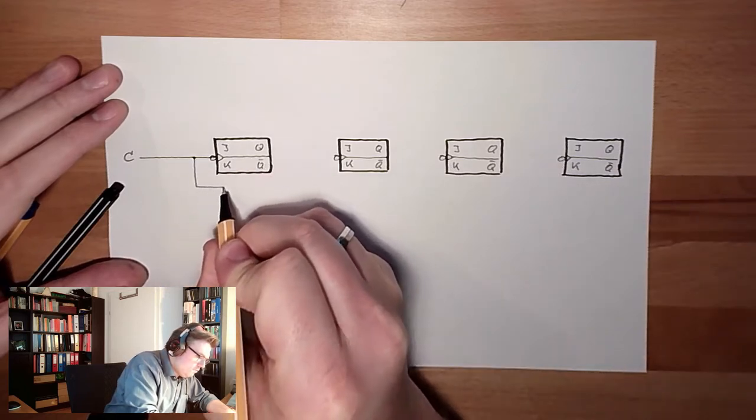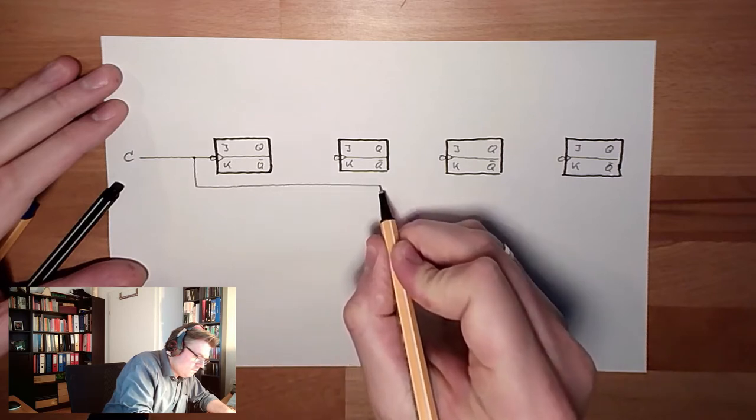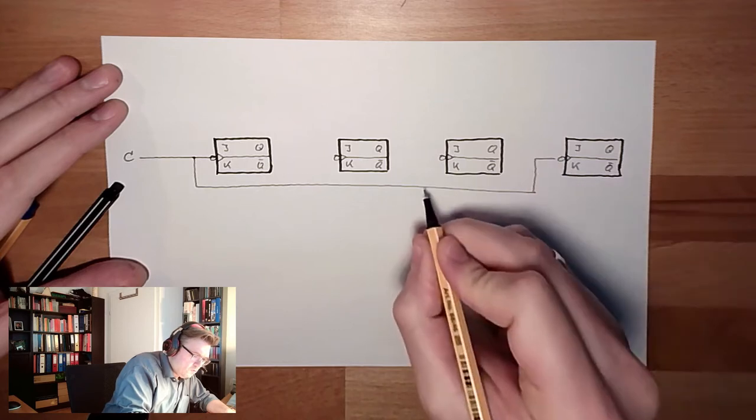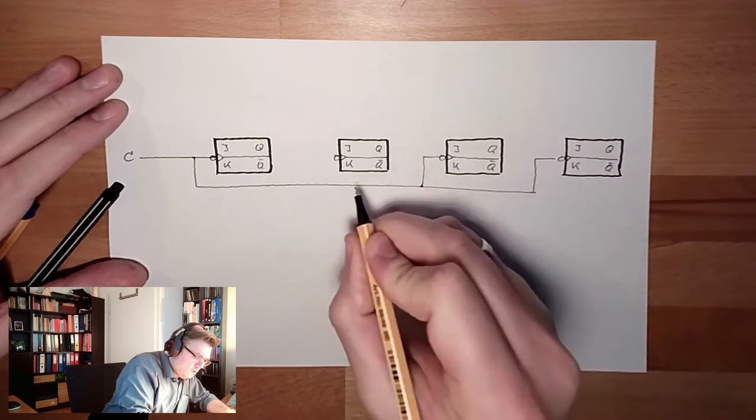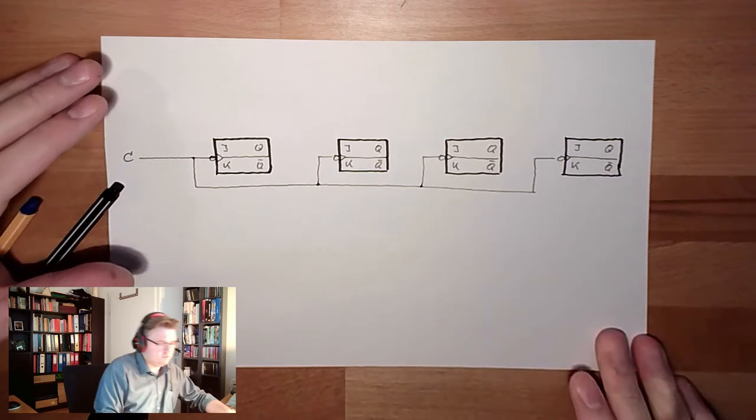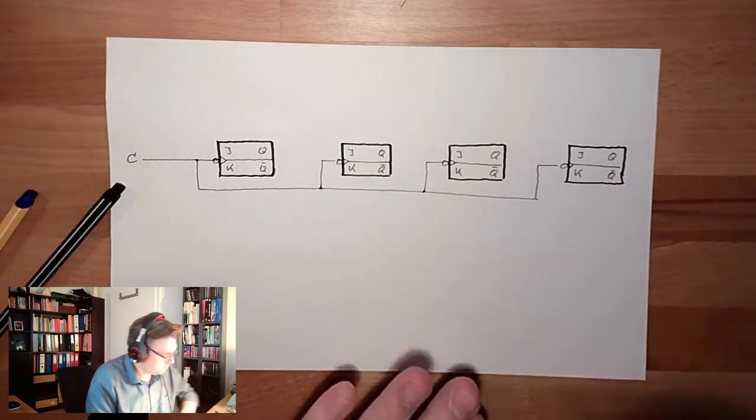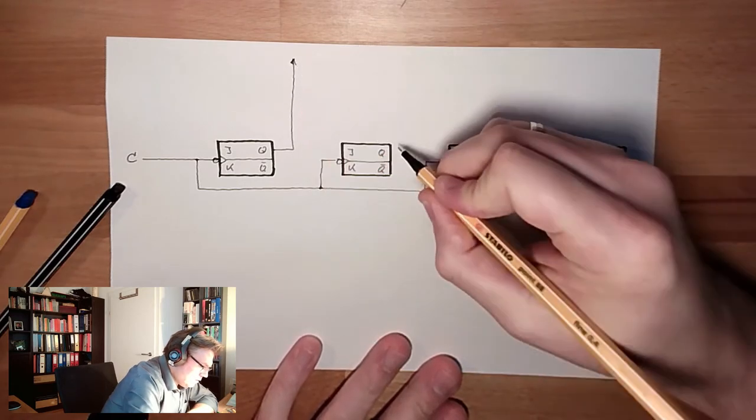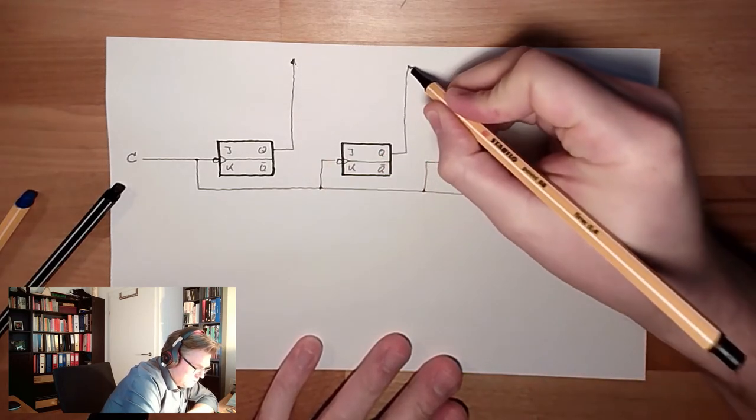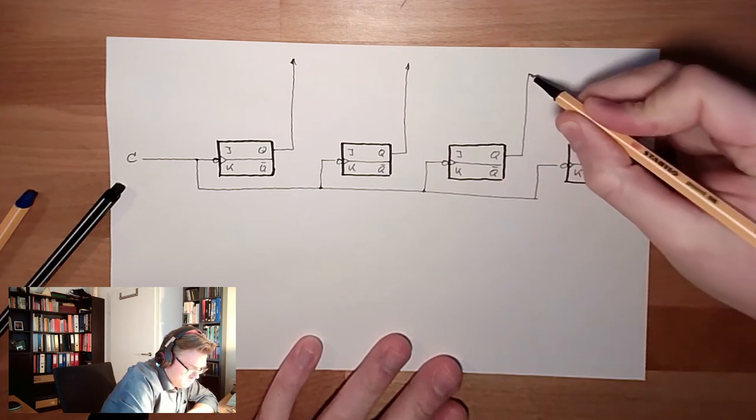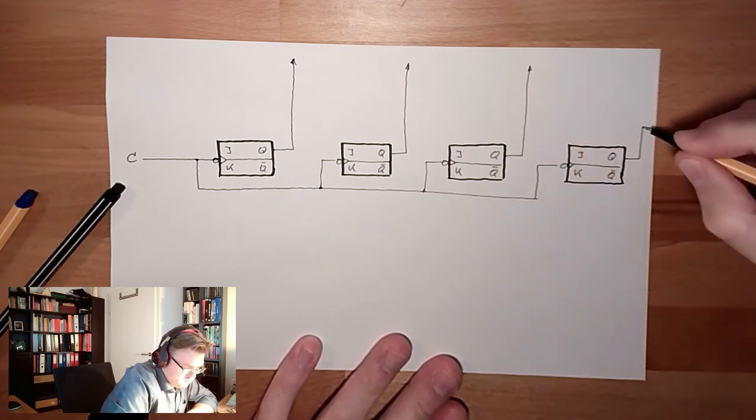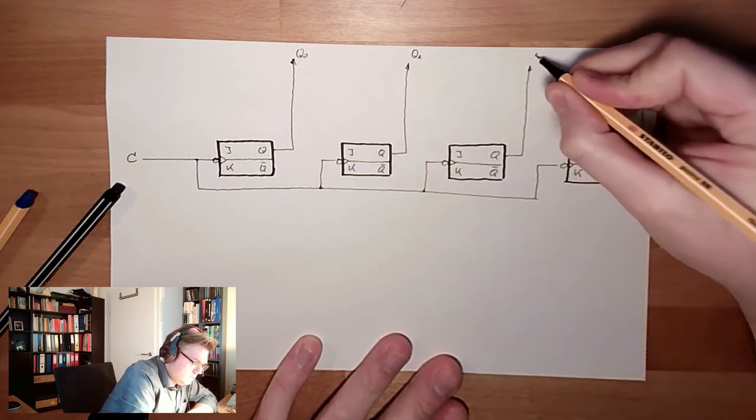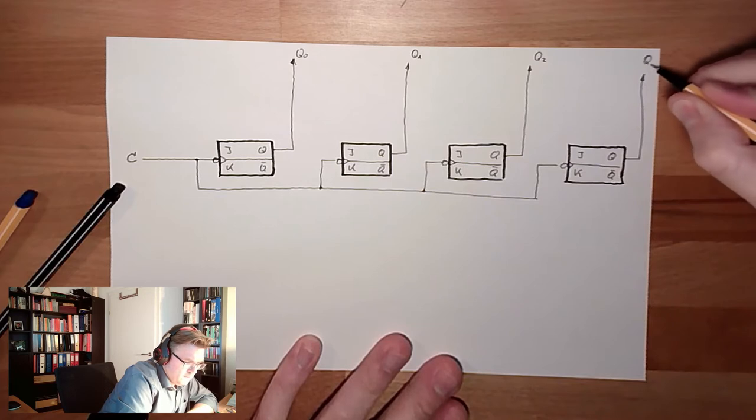Just to have it, and this is going synchronous to all flip-flops. Here this shall be again the output. So this is q0, this is q1, this is q2, this is q3, as before.